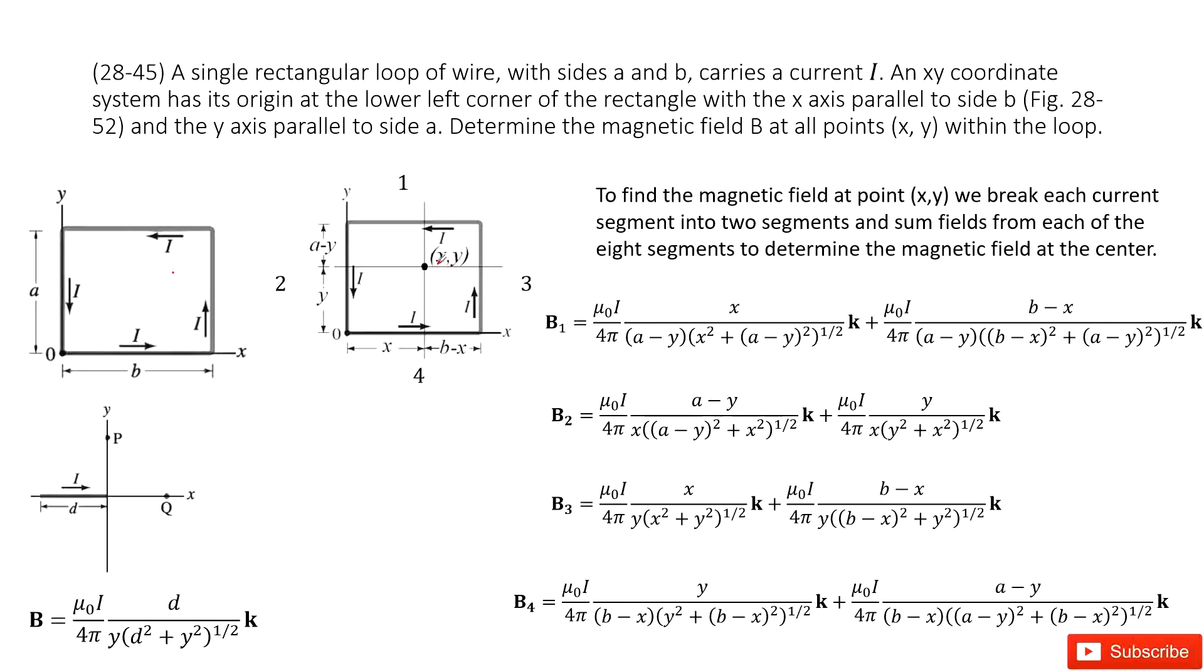And then for this one, we need to cut the wire, this loop, into four parts: part 1, part 2, part 4, and part 3. And then for each side, you can see, can we consider the similar model we solved?